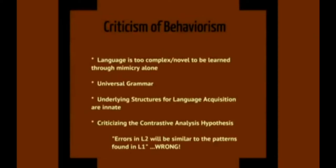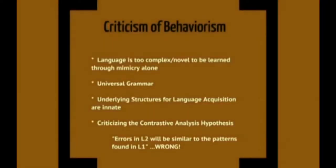Instead, second language learners do not make many errors that would be predicted given their first language, and their actual errors tend to follow the same path of development as those of a child learning their first language. This suggests that there are underlying frameworks in the brain for language learning. Whether learning a first, second, or third language, people undergo a similar path of development. This criticism proved to be the beginning of the end of the widespread acceptance of behaviorist views, and by the 1970s, behaviorism gave way to cognitive science.